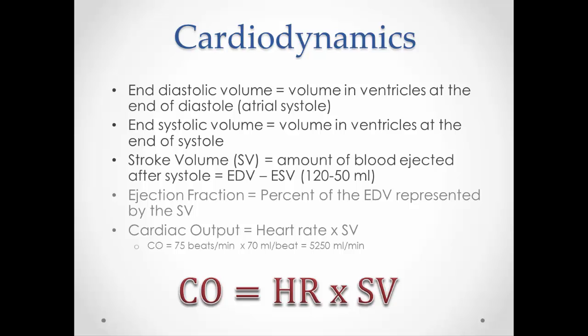Stroke volume is basically the difference between those two values — how much blood we eject with every stroke or contraction of the ventricles. If end-diastolic volume is how full we make it, and end-systolic volume is how much is left, then the difference is how much was ejected. There's also a term called ejection fraction: the percent of end-diastolic volume represented by stroke volume. This is often a clinical measure of how well the heart is functioning — whether it's a weak or strong heart — though we won't be using it here.